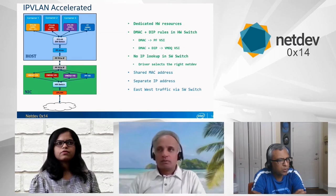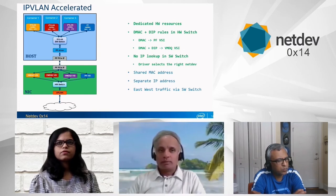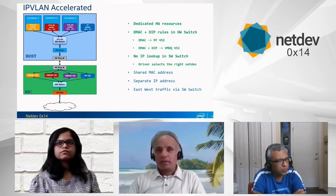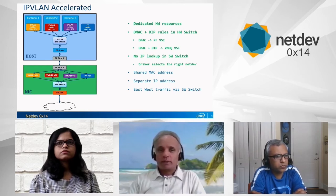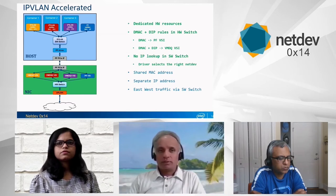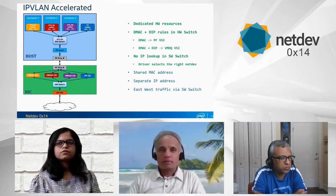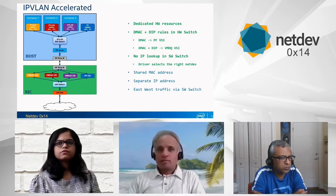This slide shows IPVLAN in accelerated mode. Each of the three IPVLAN interfaces has its own dedicated hardware resources via VMDQ VSI. In the hardware switch, there is a default DMAC rule pointing to the PF VSI, plus higher-priority DMAC plus DIP (destination IP) rules to redirect packets to IPVLAN-specific VSIs. There is no DIP lookup in the software switch, as the driver selects the right net dev based on the VSI on which packets are received. The transmit path is similar to the other models — local packets are switched within software.